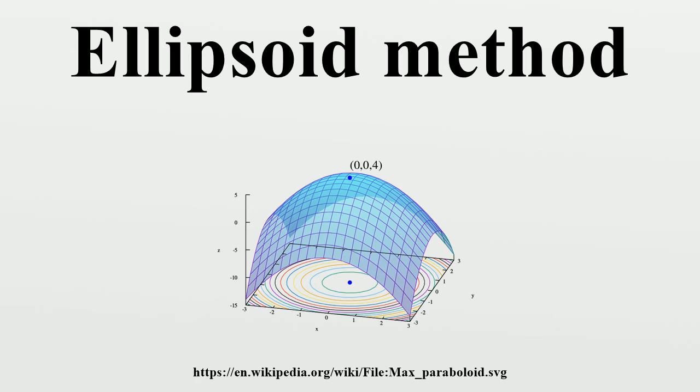At the kth iteration of the algorithm, we have a point at the center of an ellipsoid. We query the cutting plane oracle to obtain a vector such that, we therefore conclude that we set to be the ellipsoid of minimal volume containing the half-ellipsoid described above. The update is given by, where the stopping criterion is given by the property that inequality constrained minimization.